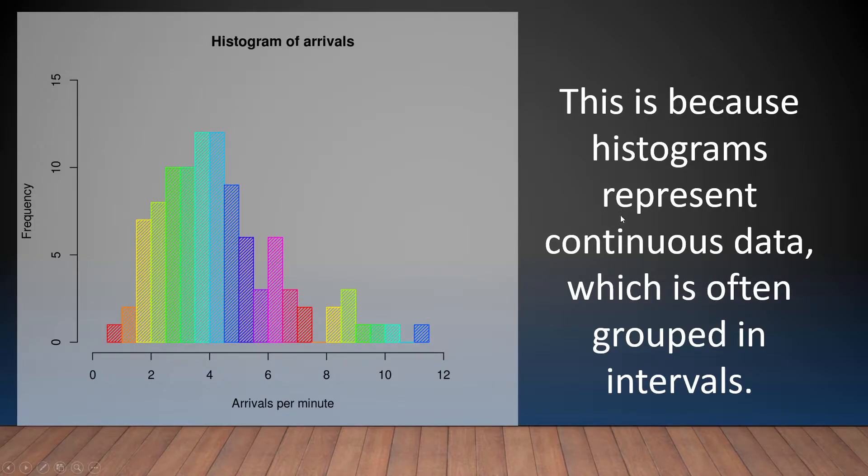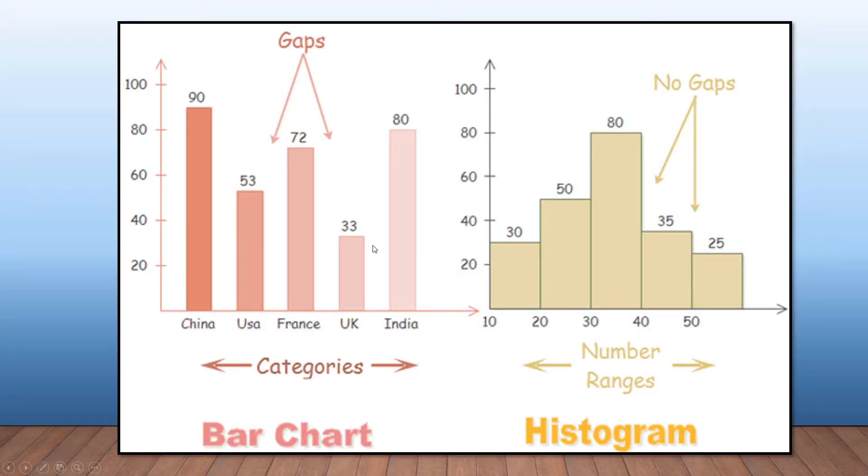This is because we are dealing with continuous data, which is often grouped in intervals. Here you can see arrivals per minute and the frequency within those minutes. So this is the difference between a histogram and your bar chart.